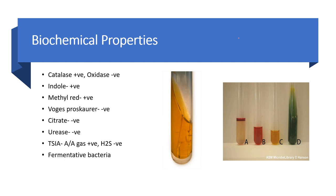Now let's talk about biochemical properties. All bacteria of the Enterobacteriaceae family have the biochemical properties of catalase positive and oxidase negative. The Enterobacteriaceae family includes all bacteria present in the intestine of humans or animals. Examples of Enterobacteriaceae include E. coli, Klebsiella, Serratia, Shigella, Salmonella, and Enterobacter.